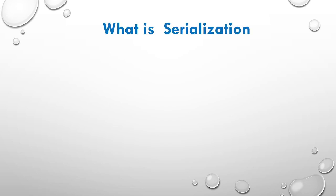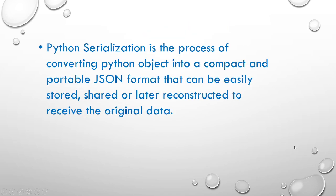Welcome back. Today we are looking at the concept of serialization and deserialization. It's very important that we are able to convert data from one form to another in programming languages. The concept of serialization is simply a process of converting a Python dictionary object to a portable JSON format. JSON stands for JavaScript Object Notation.